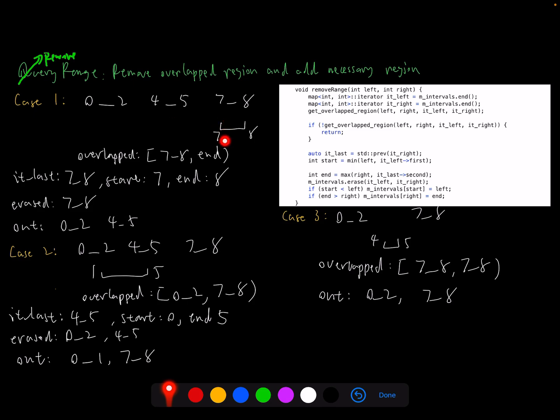So here we have the query 7 to 8, and overlap is 7 to 8 and end. So then we find the last one prior to the end one, which is 7 to 8 as well. We identify what's the region we need to possibly add later. And also we remove the left and last as what we did in the add range. Then here we will identify whether we are removing more numbers which we need to get them back. Because here we removed the region from 7 to 8, but the query is also the same, so we don't need to add any time interval back here. So it ends up with 0 to 4 and 5.